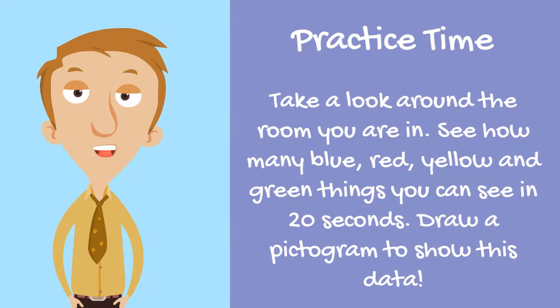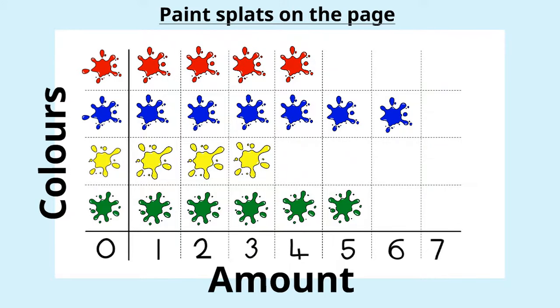Okay, it's practice time. Let's see how much you learned about pictograms today. Take a look around the room that you're in. See how many blue, red, yellow and green things you can see in 20 seconds. When you've done that, I want you to draw a pictogram to show me how many blue, red, yellow and green things are in the room you're in. Pause the video and take your time to draw a pictogram. I'll leave this one up here to remind you of all the important parts of the pictogram. Pause the video now.